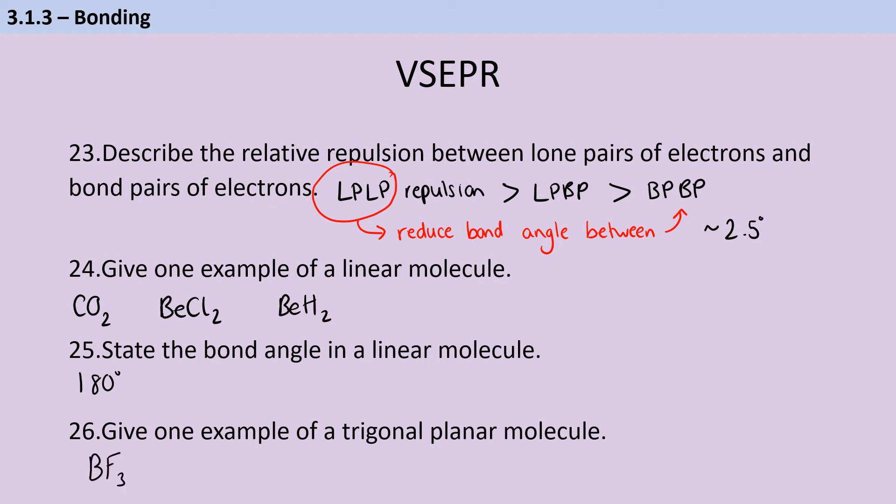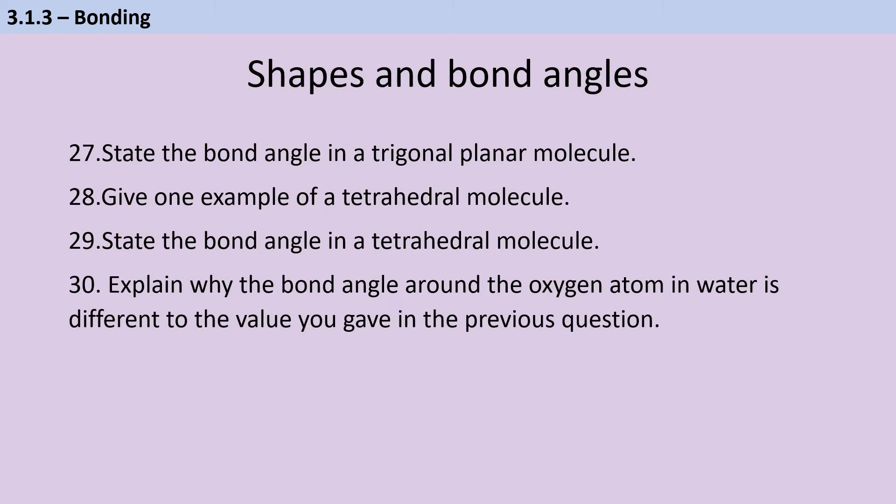Trigonal planar molecules, boron trifluoride is a really common example. Or you might also see aluminum chloride. And since this is just a flat triangle, we're going to have a bond angle there of 120 degrees.